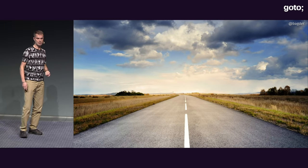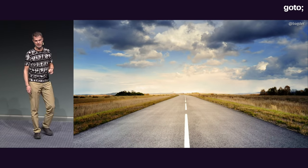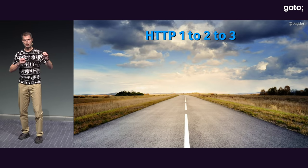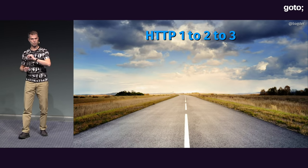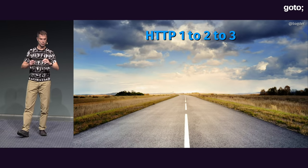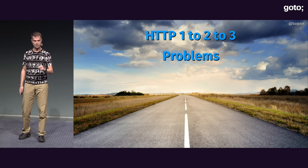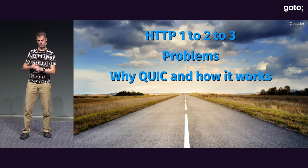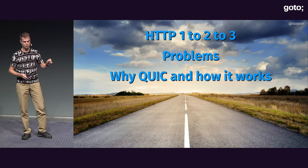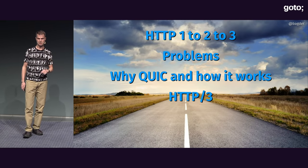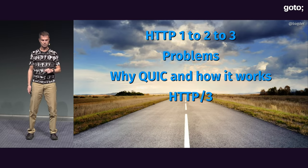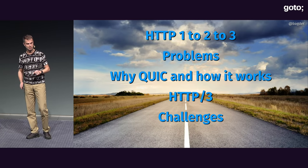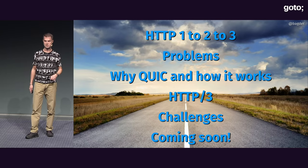So this is the road for my little story today. We're going to talk a little bit about HTTP 1, 2, and 3 — where we come from, where we are, and where we're going, a little bit why, some of the problems with that, how we're going to introduce QUIC, and a few words about how it works. HTTP 3 is the HTTP protocol on top of QUIC. There are some challenges with doing this, and it'll ship soon, surely.